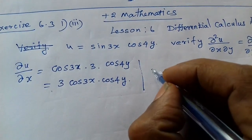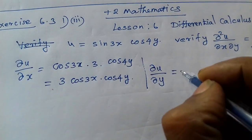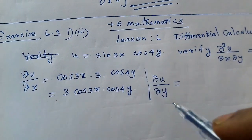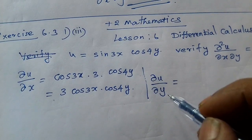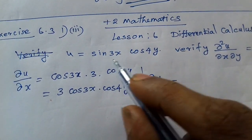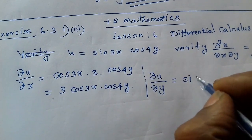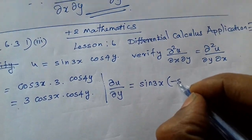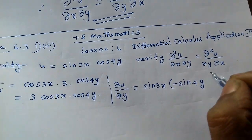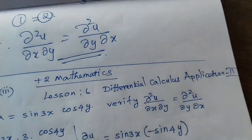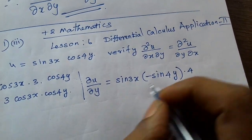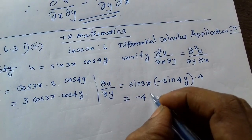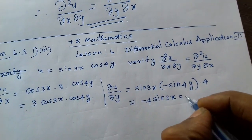Next, find ∂u/∂y. Partially differentiate u with respect to y. sin3x is treated as a constant. Differentiate cos4y: it becomes minus sin4y, then put 4 in. Simplify: ∂u/∂y = -4sin3x · sin4y.